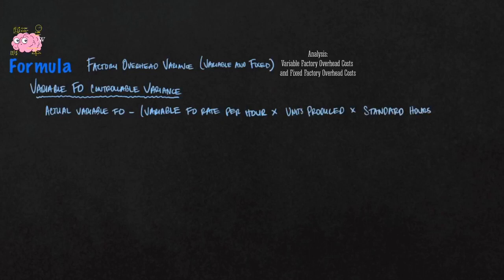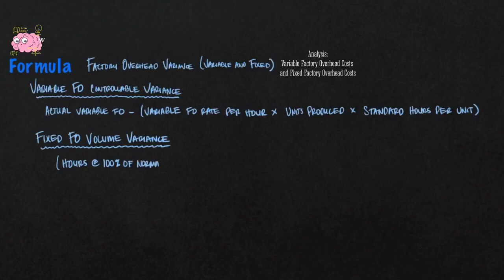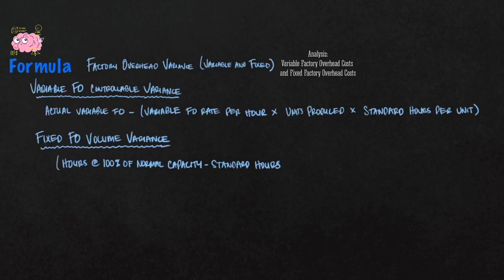The next variance to calculate is fixed factory overhead volume variance. Fixed means fixed costs, and it does not change in respect to the volume that a manufacturer produces. The formula for that is: hours at 100% of normal capacity minus standard hours for actual production, all in parentheses, times the fixed factory overhead rate per hour.